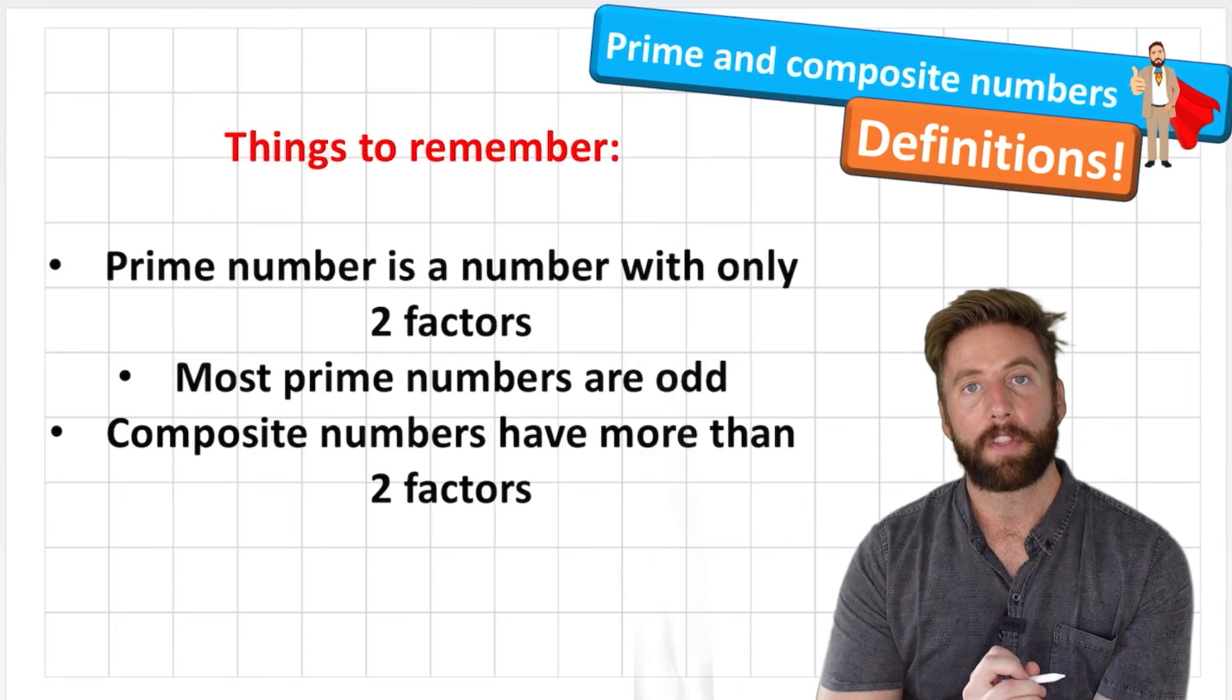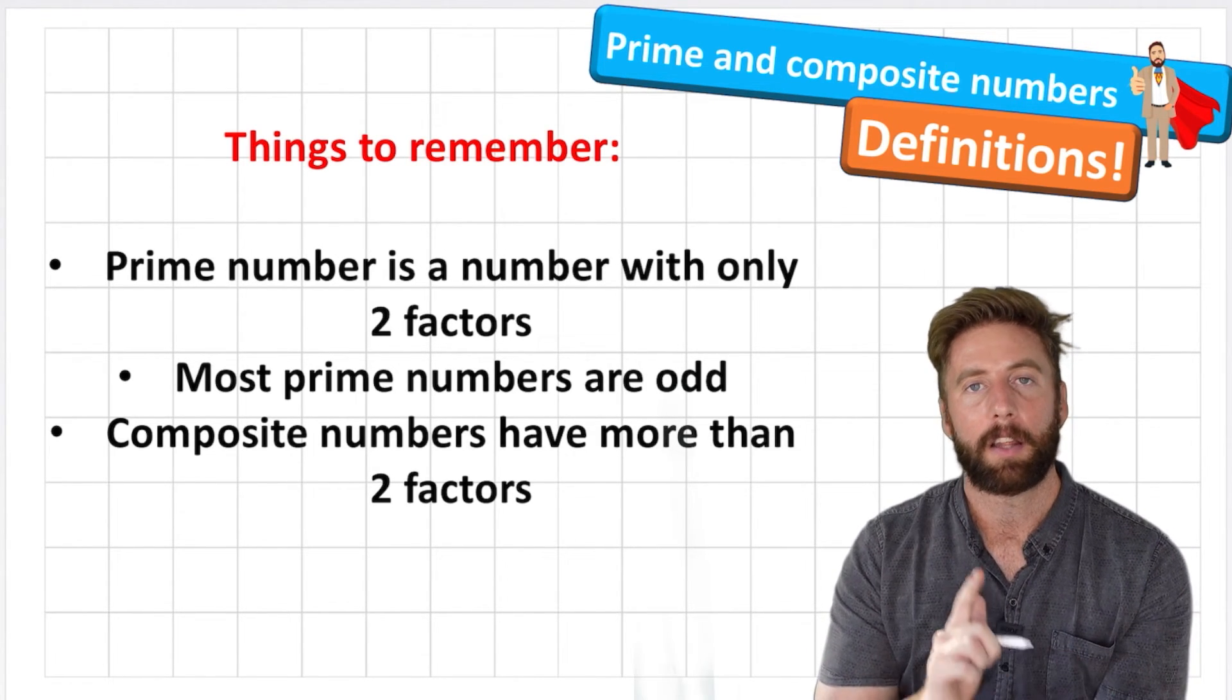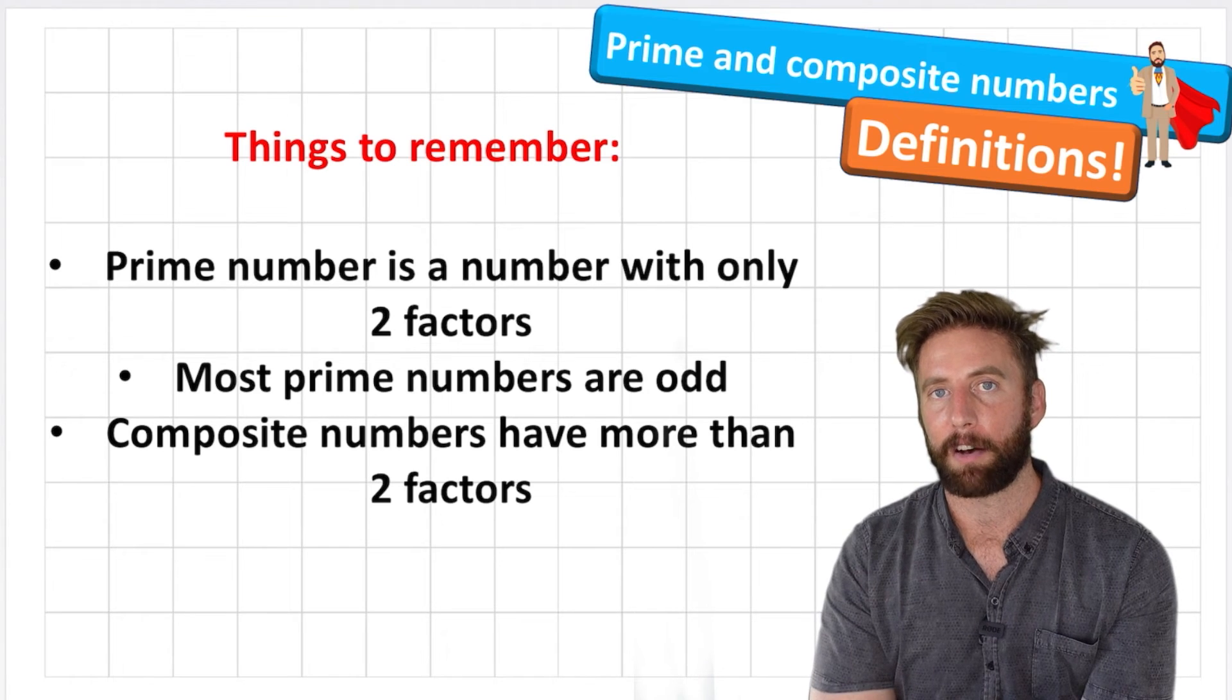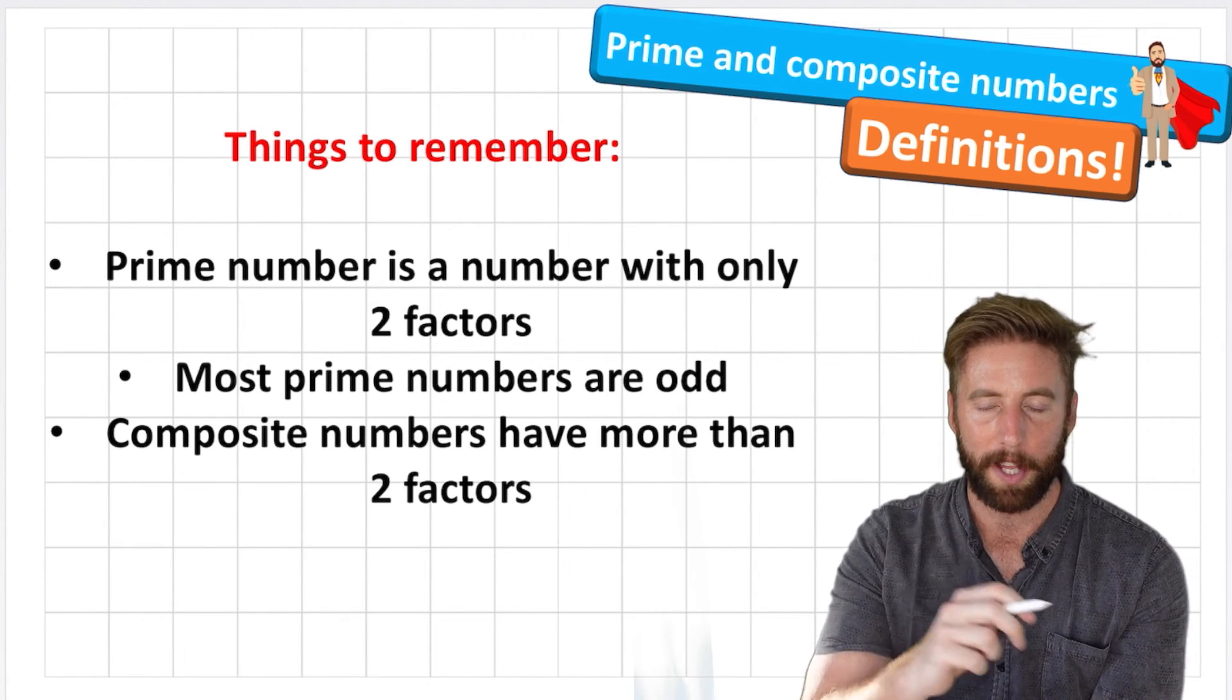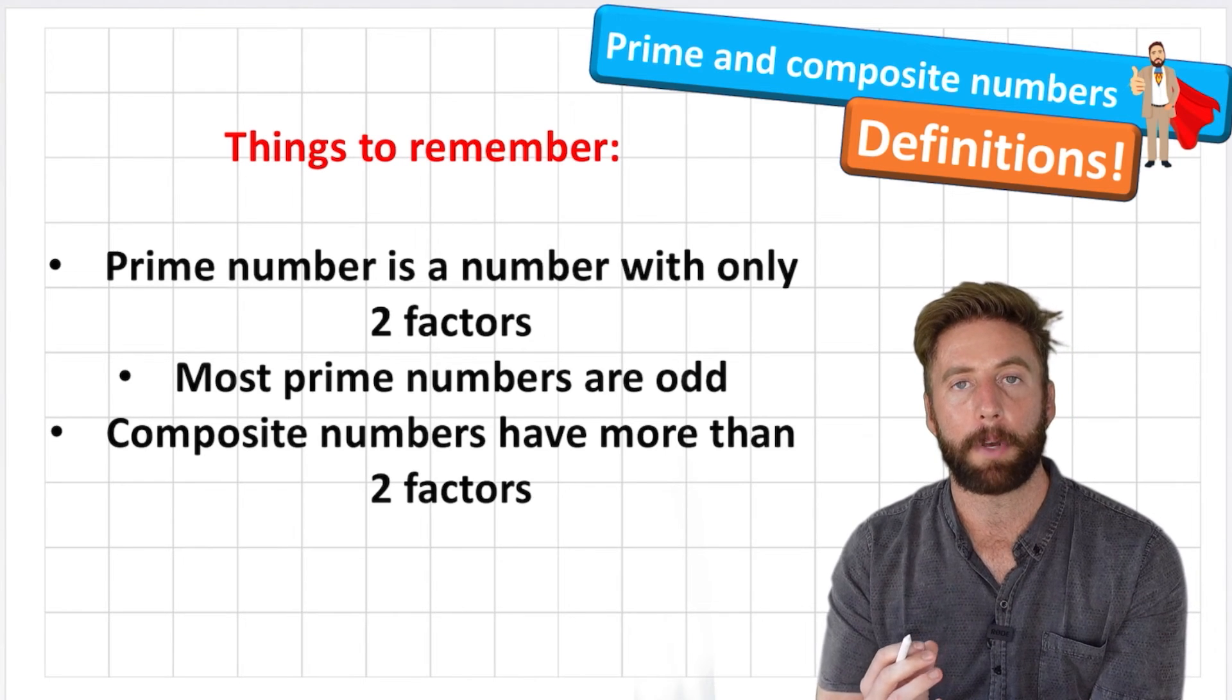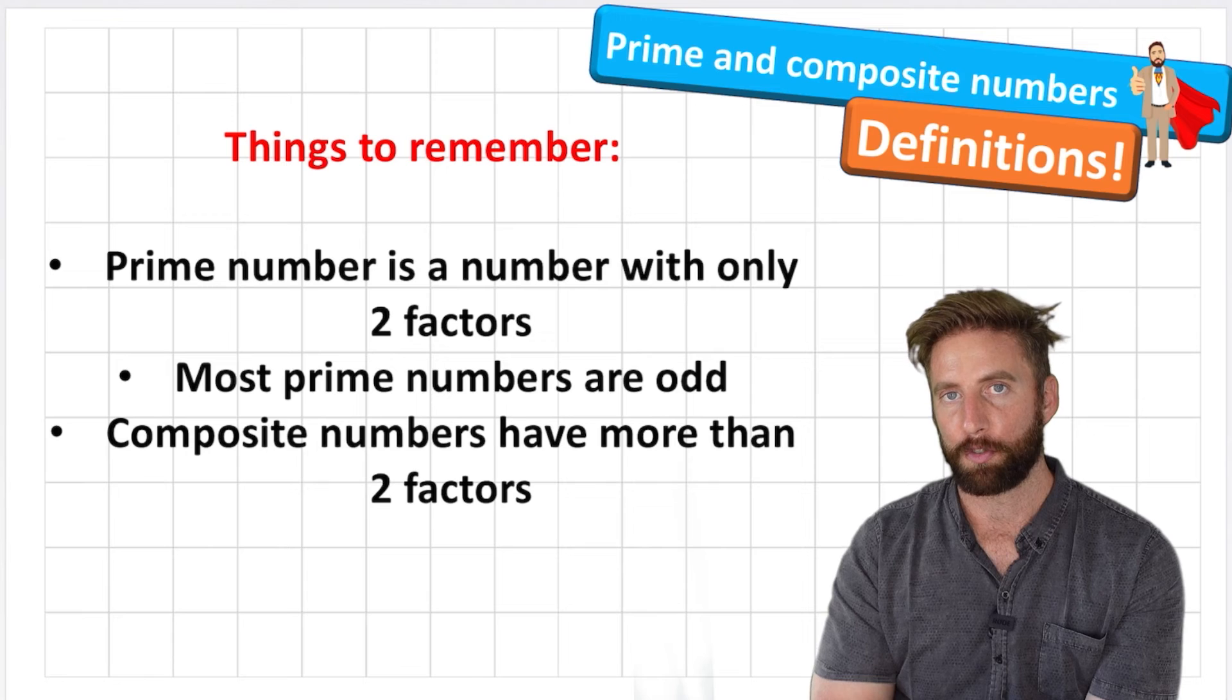So let's go over the things to remember. A prime number is a number with only two factors: number one and the number itself. Most prime numbers are odd, except the number two. That's right, well done. A composite number is the opposite of a prime number, and it's the numbers that have more than two factors.